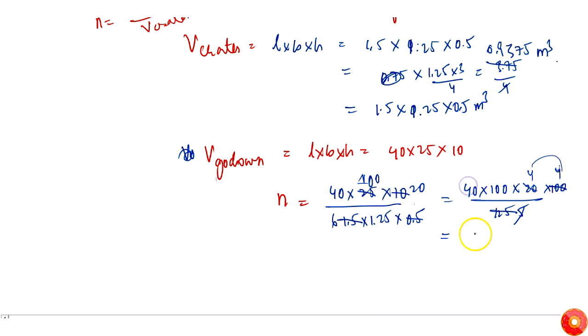16 into 16 is simply 256. 16 into 4 is 64, three zeros. So 64,000 crates can be fit in this.